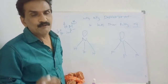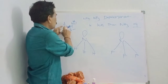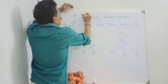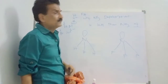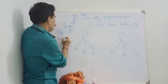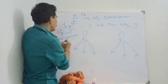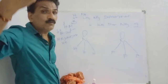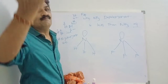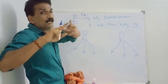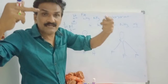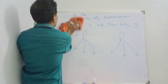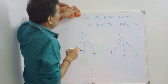If the electronegativity difference is more, the more the polarity, the more the dipole moment. For example, hydrogen and fluorine - according to the Pauling scale, the electronegativity of fluorine is 4.0 and hydrogen is 2.1 or 2.2. So HF has a greater dipole moment than HCl, because the electronegativity difference between hydrogen and fluorine is more, which means more polarity and more dipole moment.